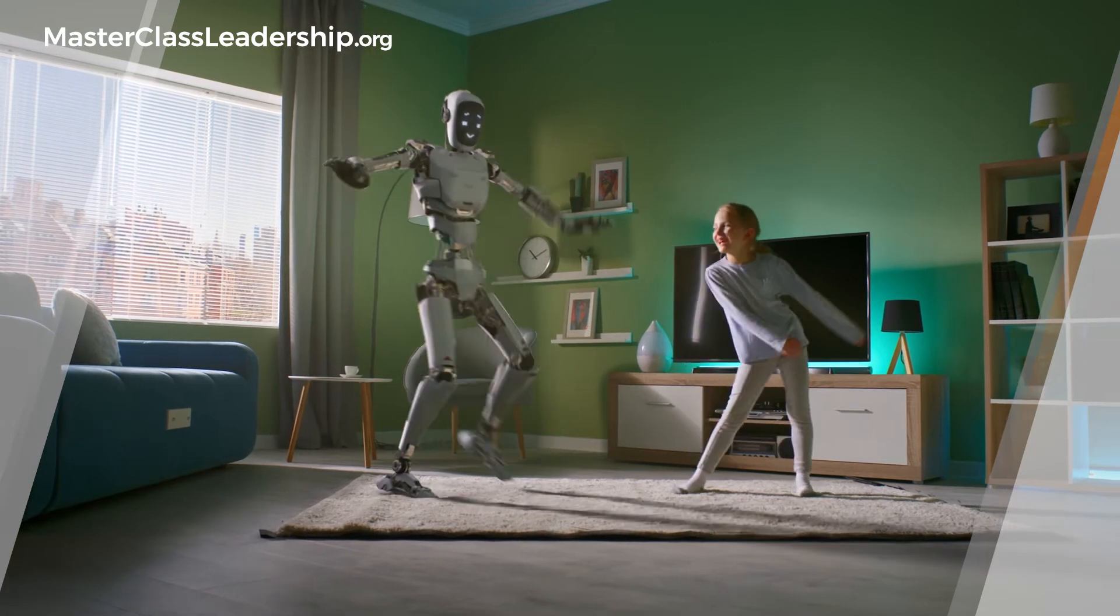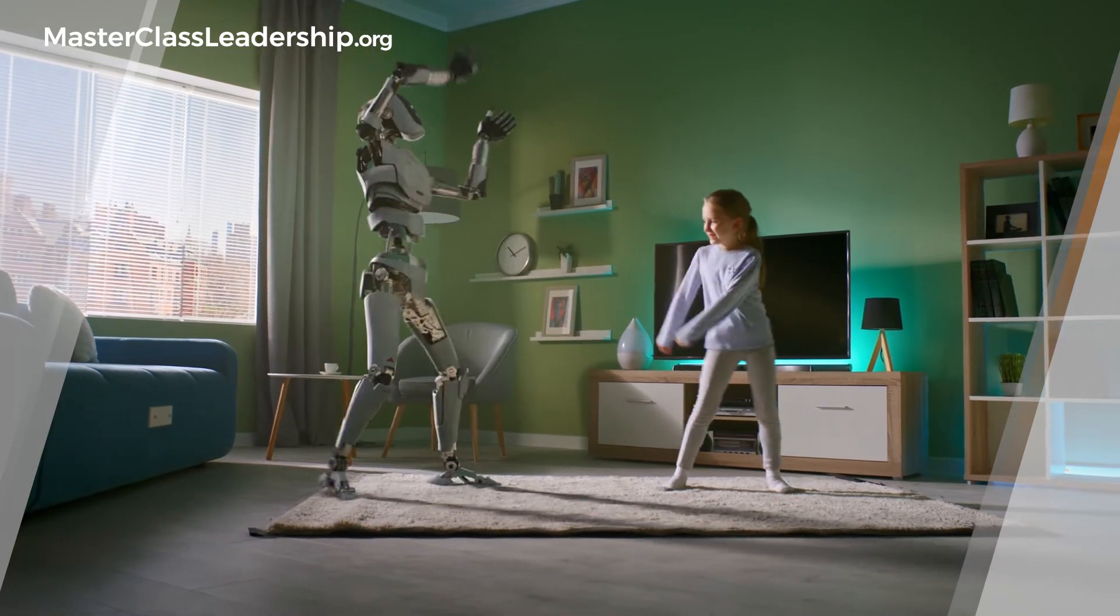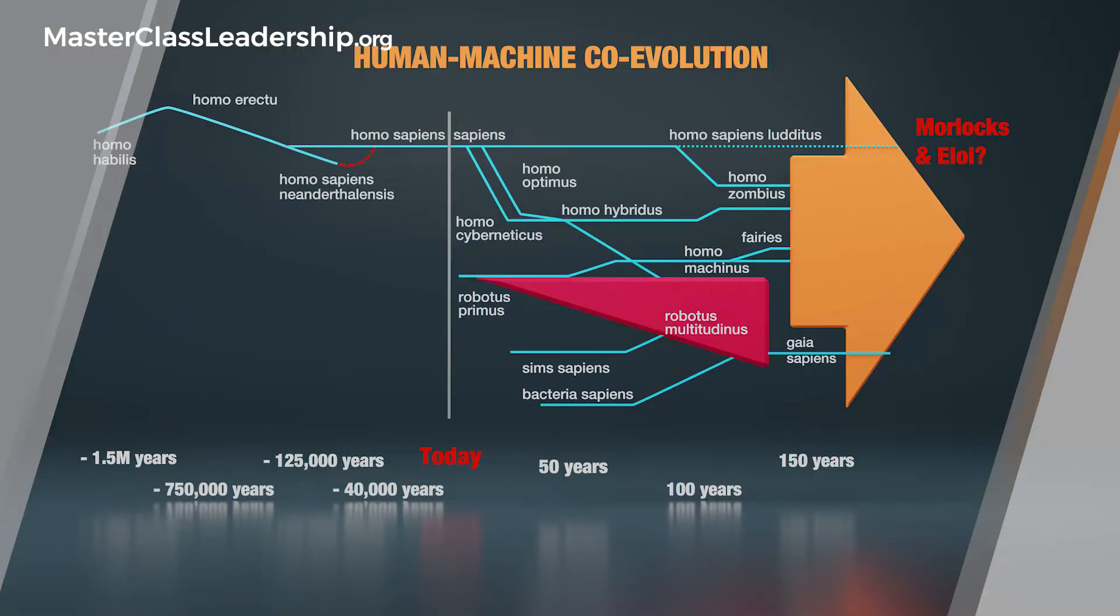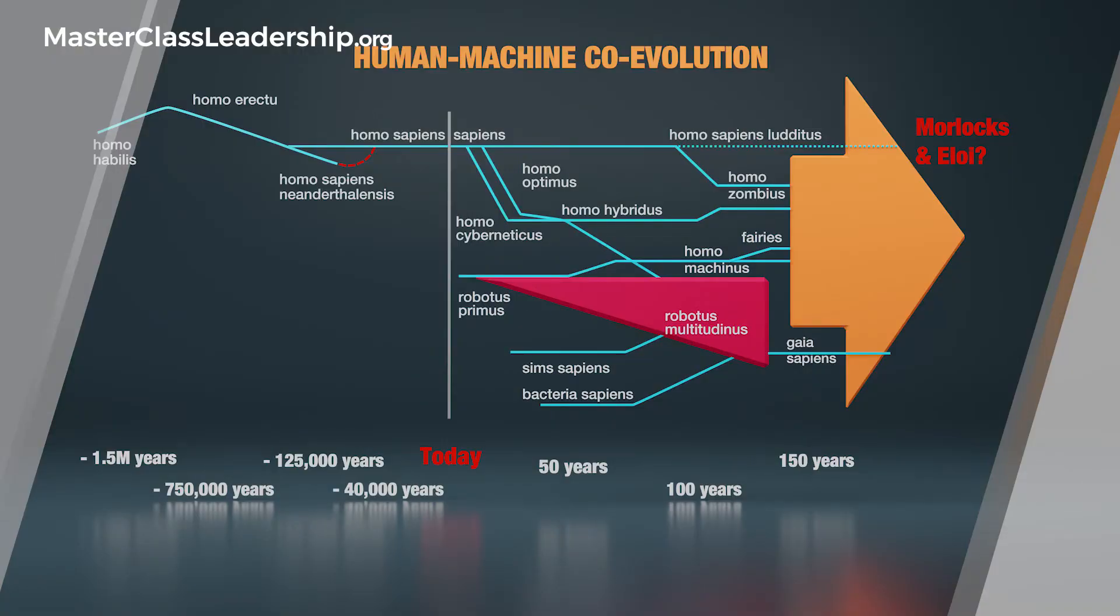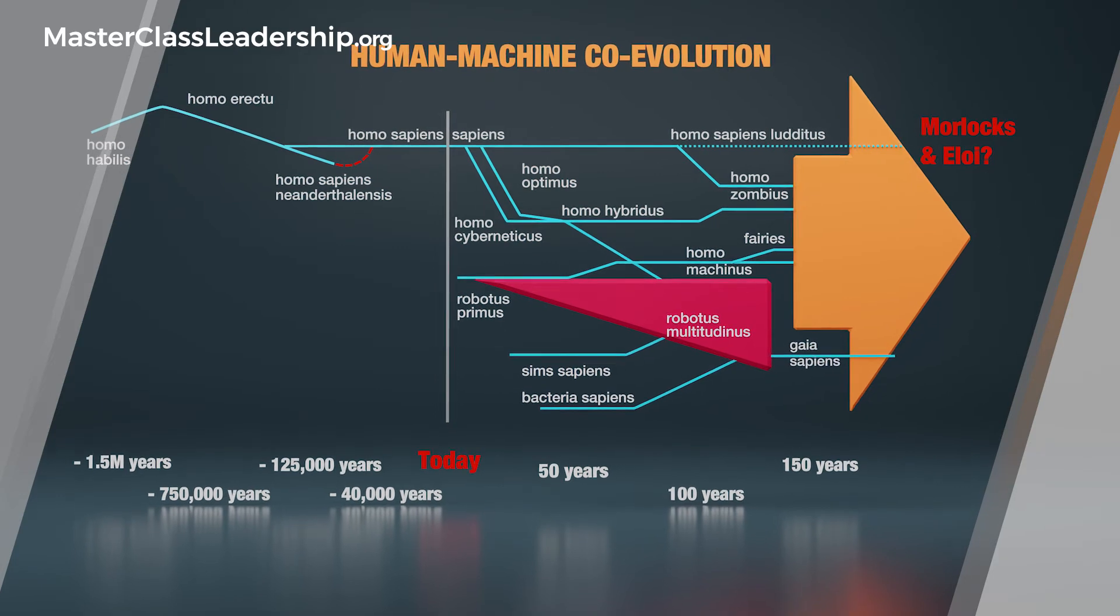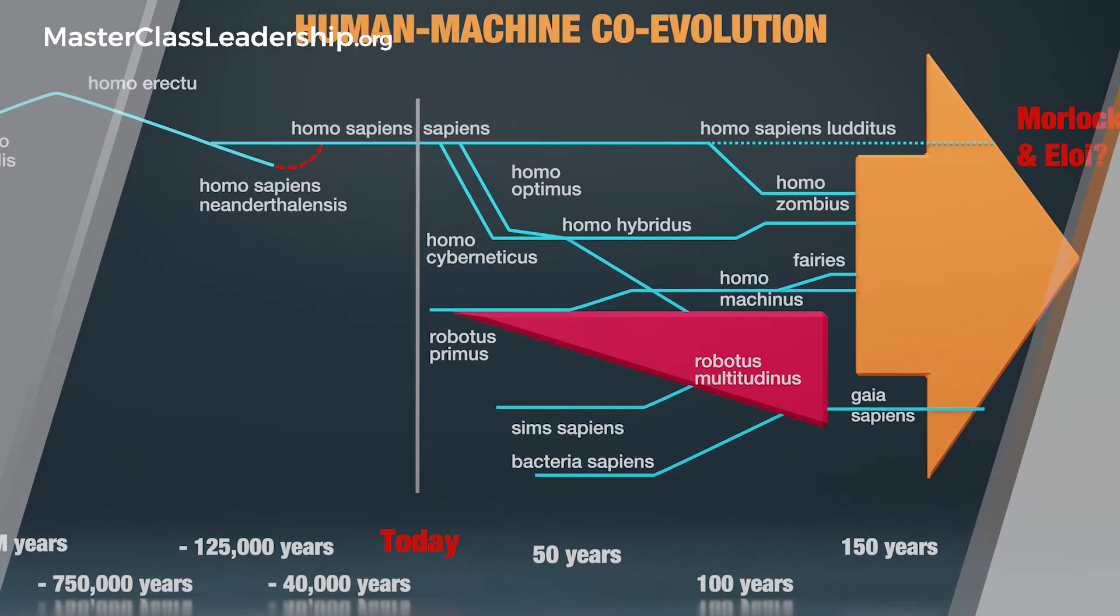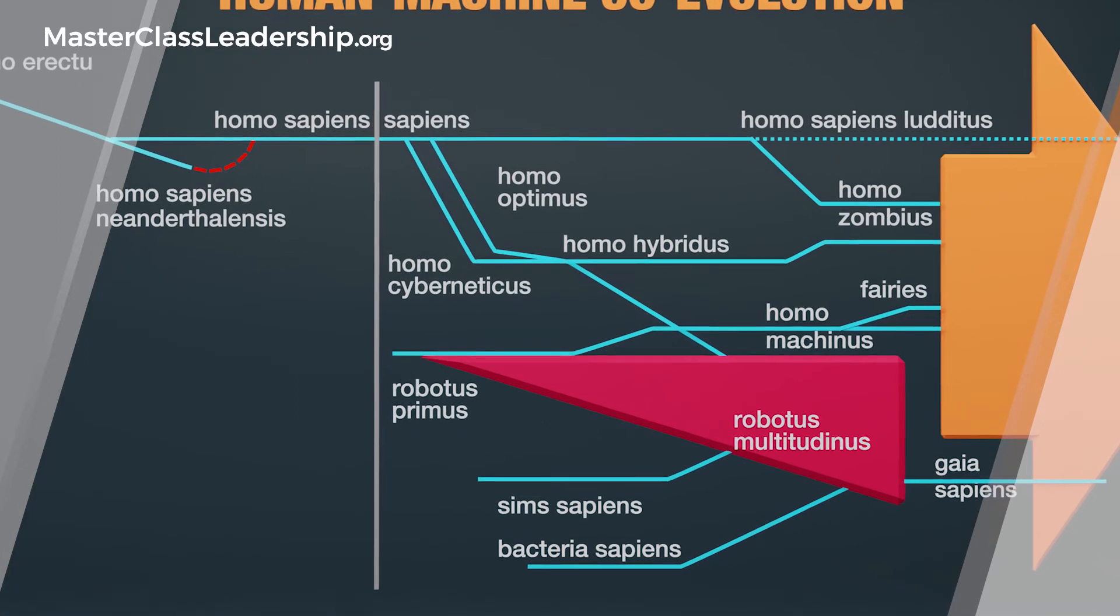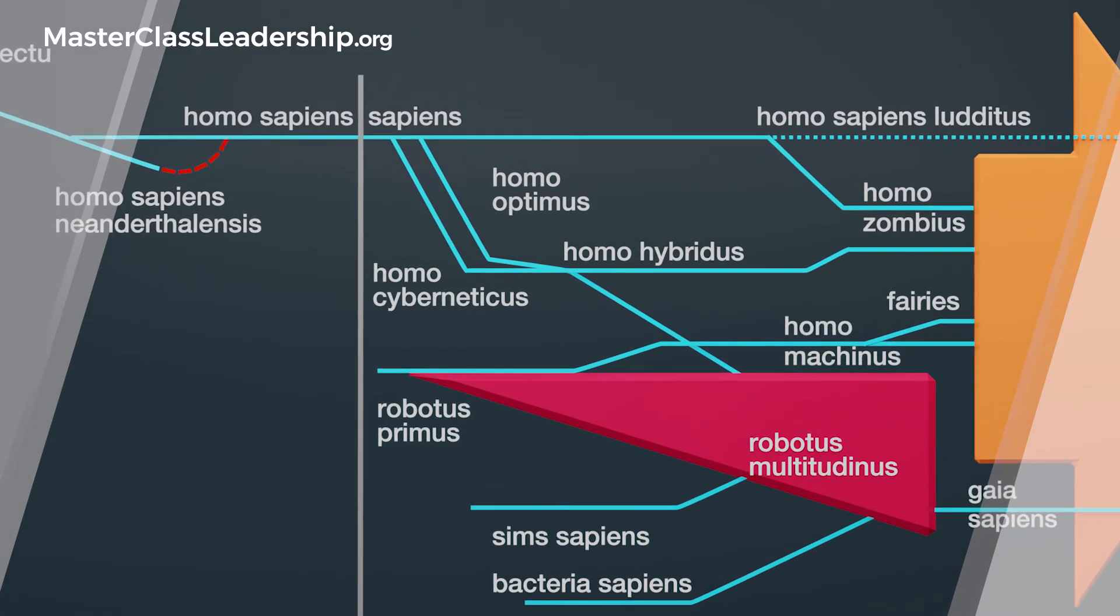So bringing this together we can see already the beginnings of our future timeline where we have homo cyberneticus where we connect our bodies to the machine world, and homo optimus where we link that to an optimized DNA structure, and then we get the homo hybridus where you've got optimized DNA, optimized body, but you're also linked into the machine world. And meanwhile AI is forming robotics primus and robotics multitudinous, and we've got the sims from the computer games and the bacteria, they're also becoming smart.